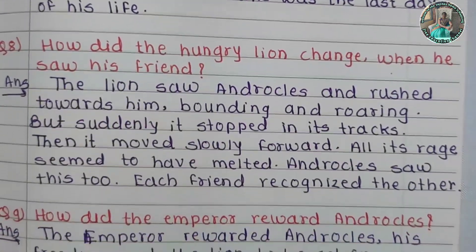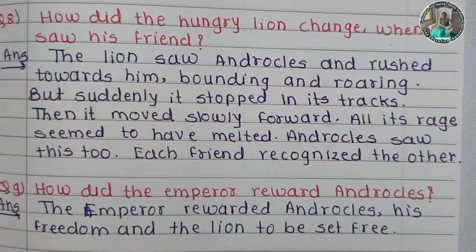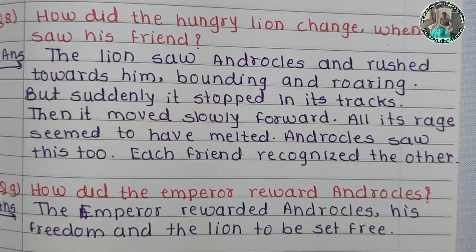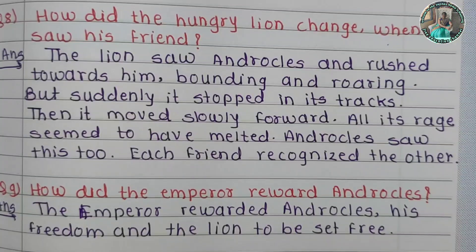Question number nine, the last question: How did the emperor reward Androcles? The emperor rewarded Androcles with his freedom, and the lion was set free.